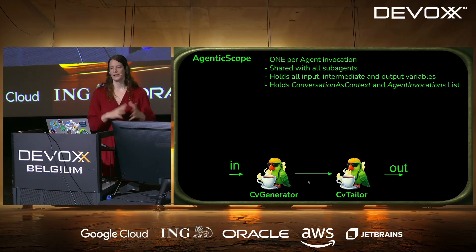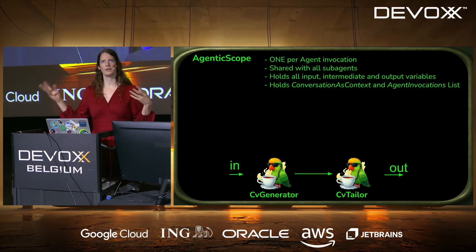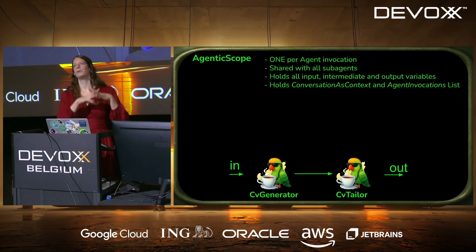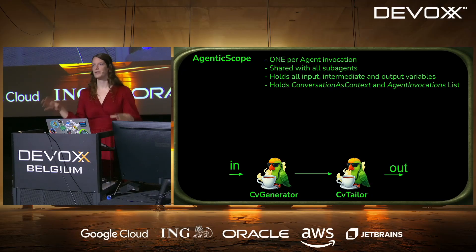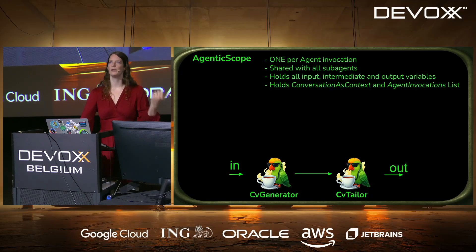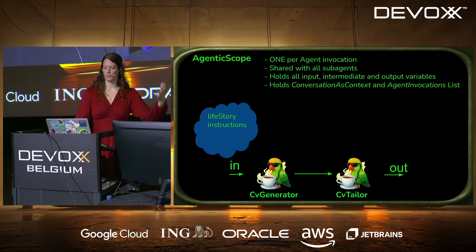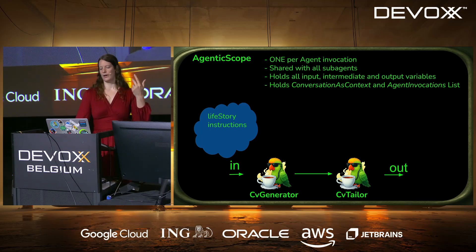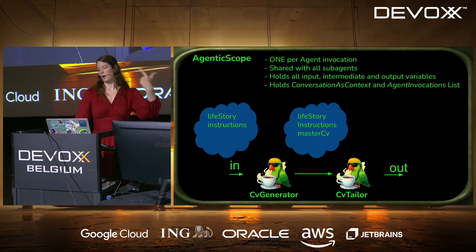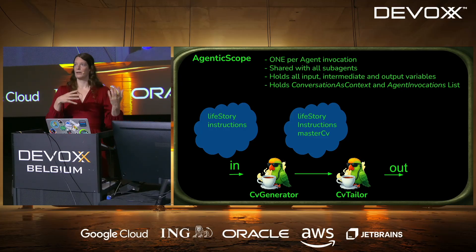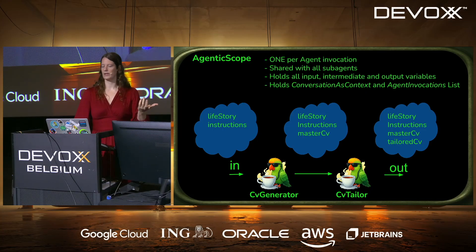One important thing with LangChain4j Agentic is how we manage all the variables that fly around — they are all part of an agentic scope, and there's only one in your agentic system. No matter how many layers or how much depth you have, there's one agentic scope that holds all input, intermediary, and output variables, as well as the conversation as context and the agent invocation list. In our example, we start with life story and instructions. The CV generator adds the master CV. The CV tailor can in theory edit the master CV again, but in this case it makes a tailored CV. You can change anything in the agentic scope.